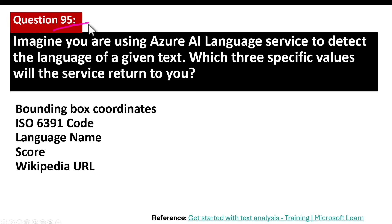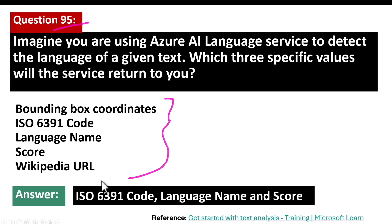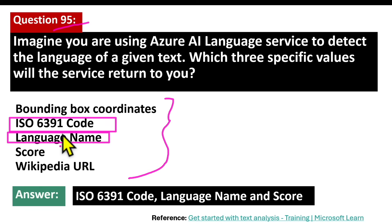Question number 95. Imagine you are using Azure AI Language service to detect the language of a given text. Three specific values will be returned by the service. The correct answers are: ISO 639-1, language name, and score.